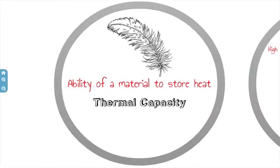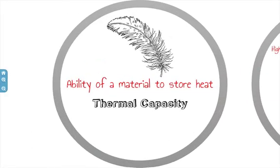Thermal capacity is the ability of a material to store heat, and it's roughly proportionate to its mass. Dense material will hold a lot of heat, and fluffy materials will not hold a lot of heat. Water actually has the highest thermal capacity at ordinary air temperatures, and is the reason that water can actually control the surrounding temperatures of an area.